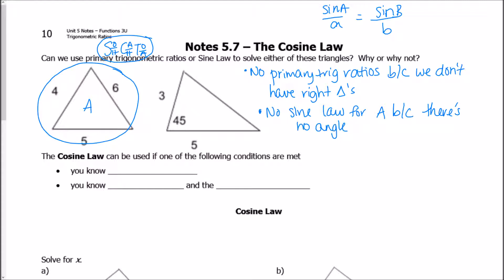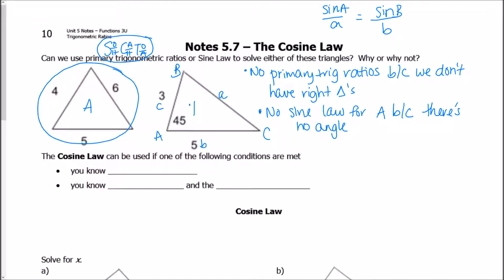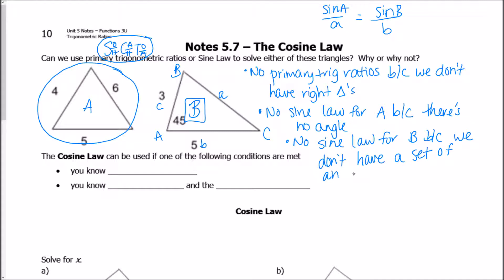The only way we can use the sine law — remember, sine law is sine A over a equals sine B over b — is if we need at least three pieces of information, and one of them has to be an angle. If this is angle A then this is side a, angle B then side b, angle C then side c. The only way we can use the sine law is if we have at least one set of a side and its corresponding opposite angle known. Unfortunately we do not, so no sine law for Triangle B either.